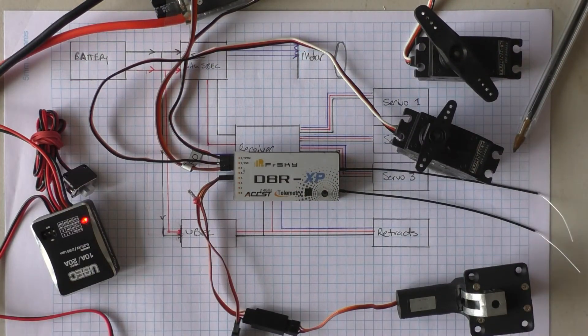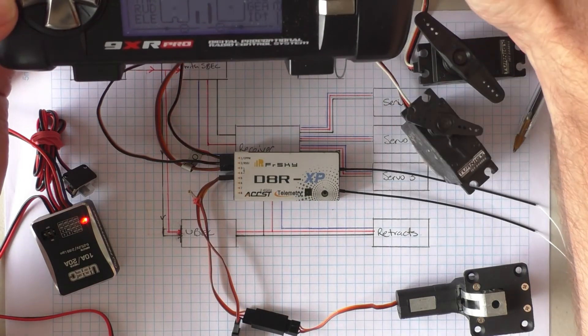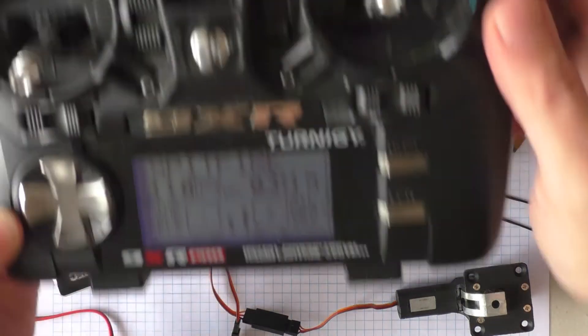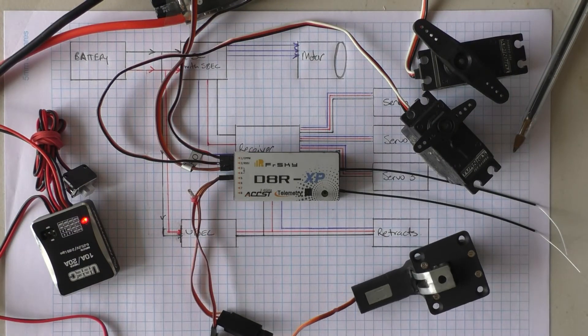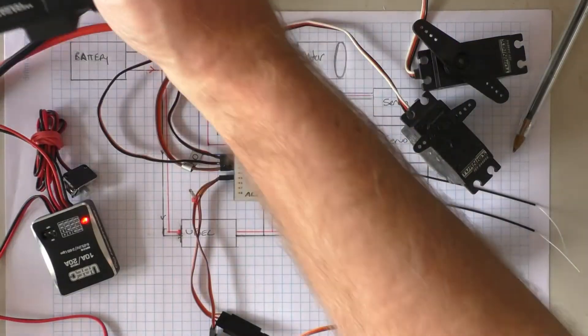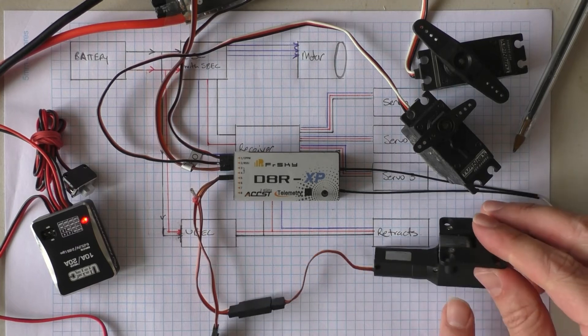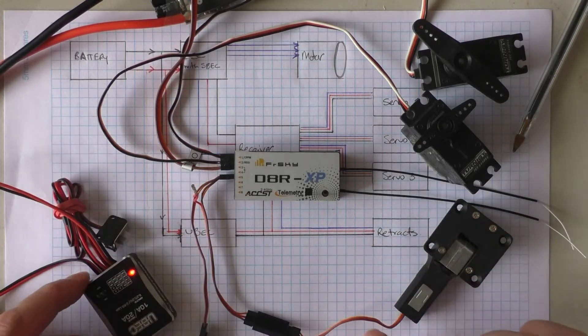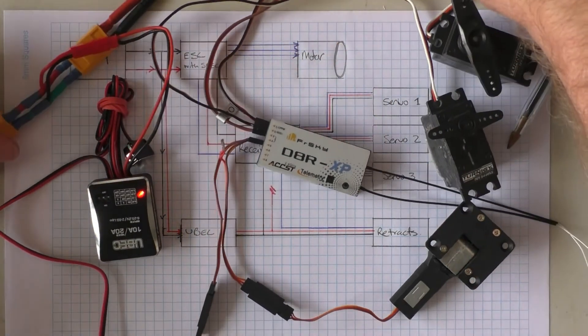So, when I move my sticks, you see, the gear is moving, and when I flick my gear switch, our retract should go. There we go. So this servo here is now being powered by the UBEC. And that's the flow.